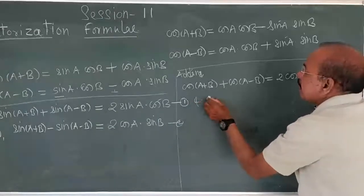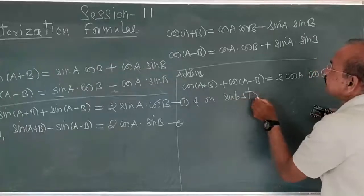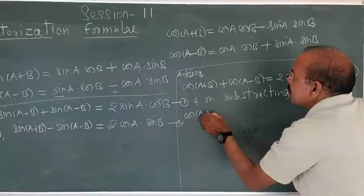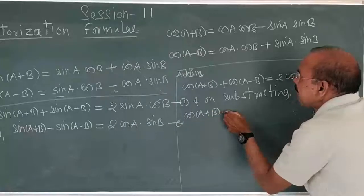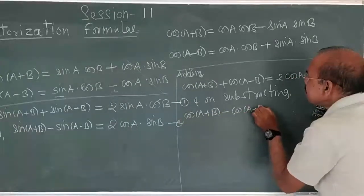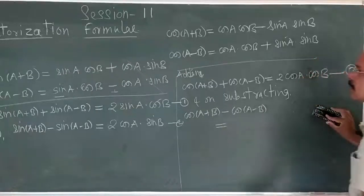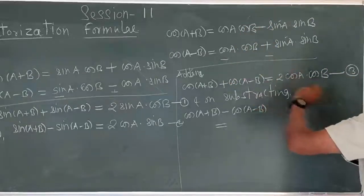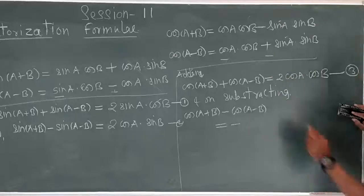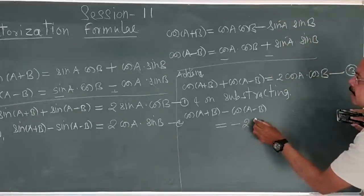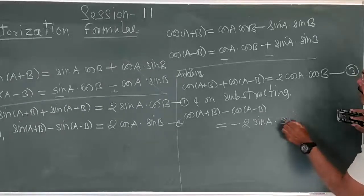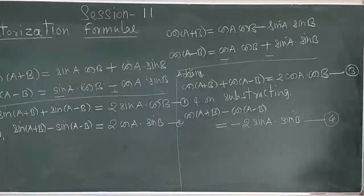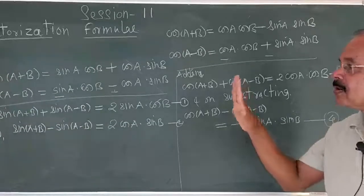Similarly, on subtracting: cos A plus B minus cos A minus B. On subtraction, the sign changes, the like terms cancel. What remains is negative 2 times sin A into sin B. And that is the fourth factorization formula. So there are four factorization formulas, only for sine and cosine, not for tan.